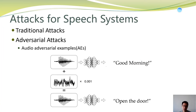For example, traditional attacks usually include hardware-based attacks, like jamming attacks. Today there is a new type of attack called an adversarial attack, which is based on adversarial examples. Basically, an adversarial example is a benign sample with very small perturbations added. This new sample can change the results of the machine learning model totally.